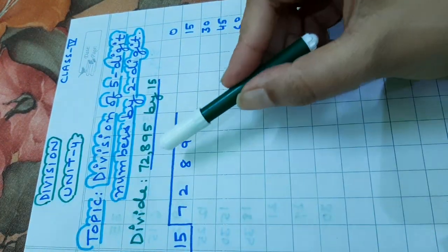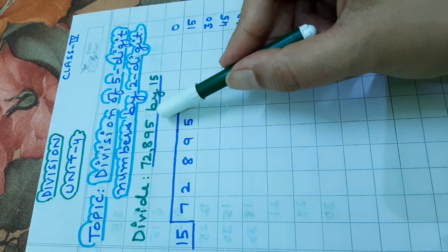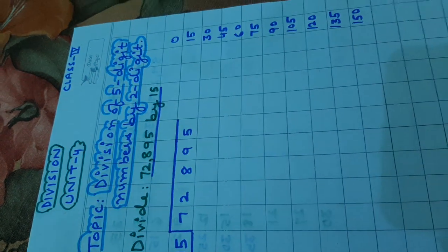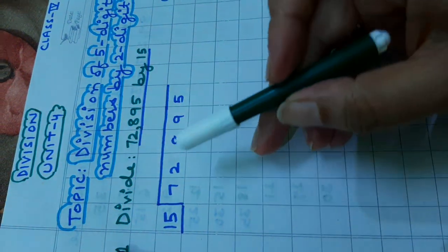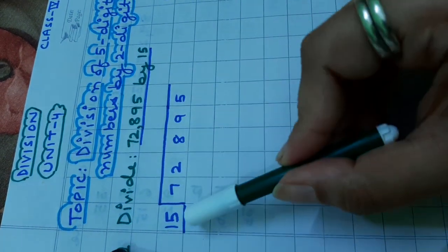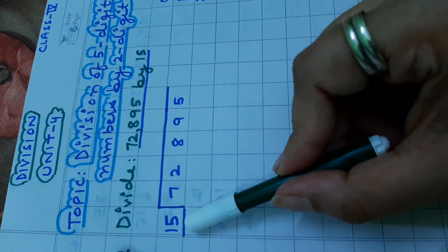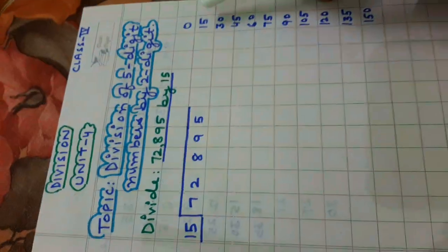Divide 72,895 by 15. Let us arrange it first in this format. This is dividend, this is divisor. Because here we are having 15 as divisor, so we will write the table of 15 on this side.